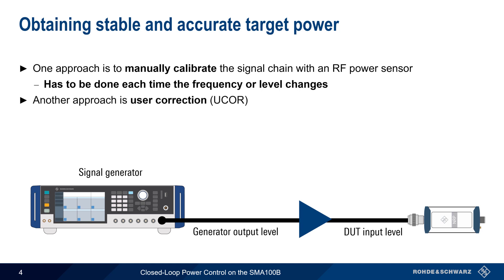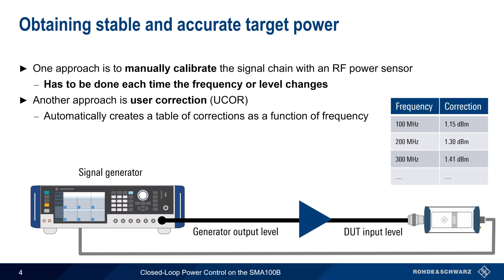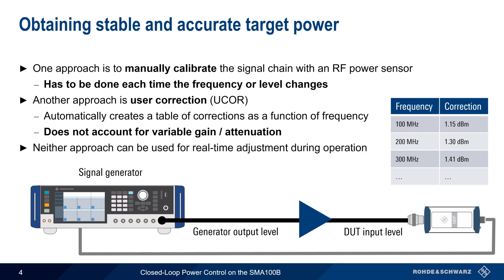A somewhat more sophisticated approach is something called user correction. Here, the generator uses the attached power sensor to automatically create a table of corrections as a function of frequency. The most important limitation of user correction is that it is performed at a fixed power level, and therefore does not account for any variation in gain or attenuation along the path. Note too that both of these approaches involve replacing the DUT with a sensor, and thus neither approach can be used for real-time adjustment during operation.